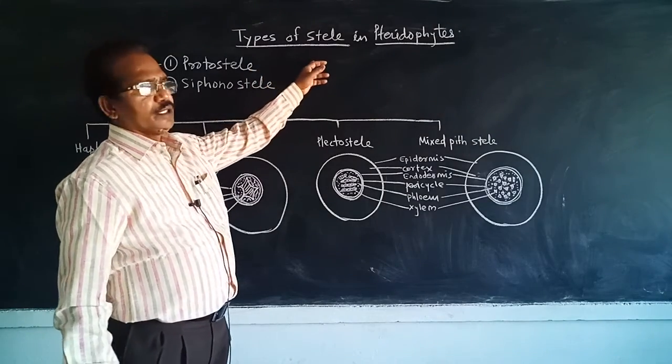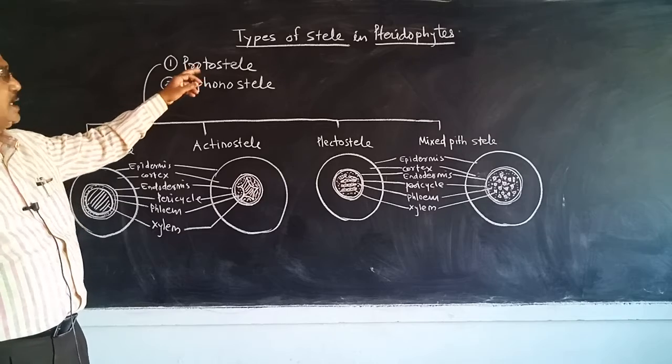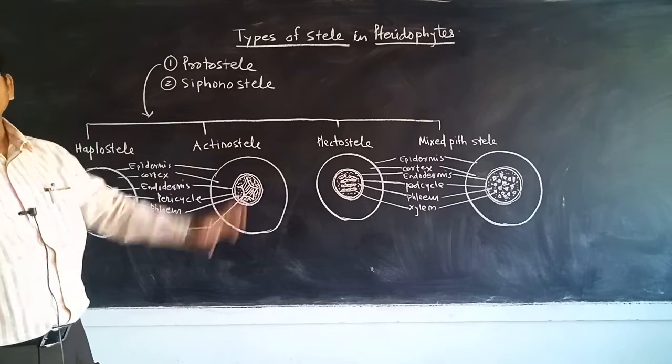In pteridophytes, the steles are of two types: one is protostele and the other is siphonostele.